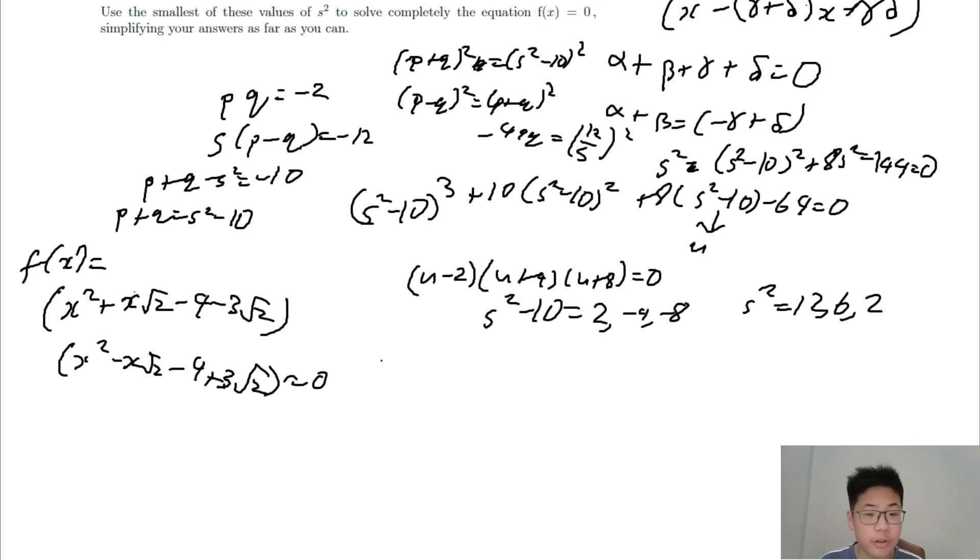So if you use the quadratic formula, x equals (-√2 ± √(18 + 12√2))/2. Maybe there should be a sign or a double plus minus because all solutions are valid.